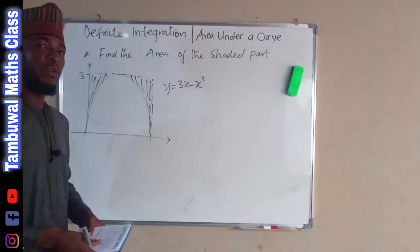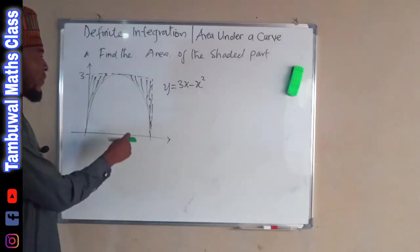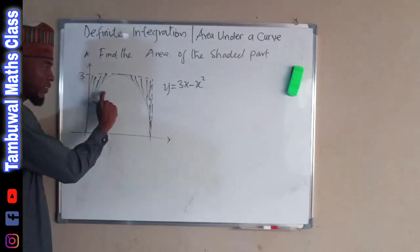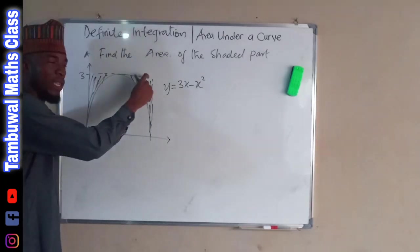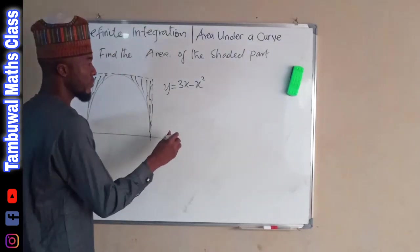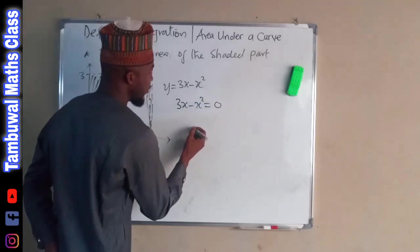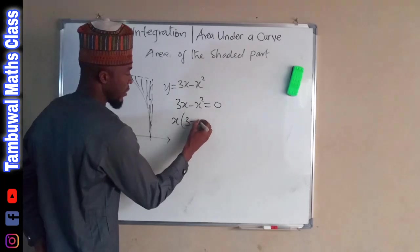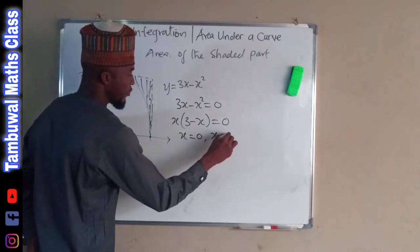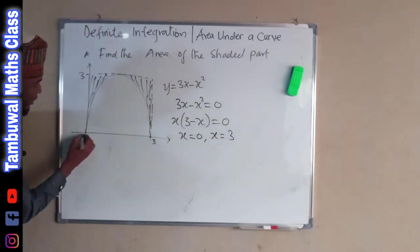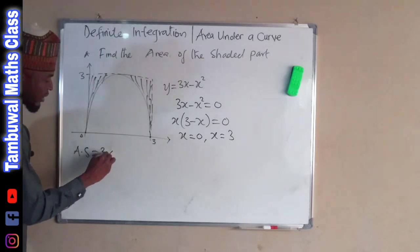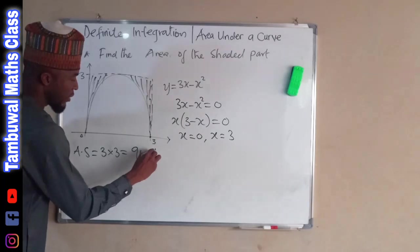Now let us look at the second problem. We are asked to find the area of the shaded region. To do this, we find the area of the quadrilateral, then find the area under the curve, and subtract. First, we find the zeros of 3x minus x squared equals 0. Factoring out x gives us x equal to 0 and x equal to positive 3. So this point is 3 and this point is 0, meaning the quadrilateral is a square with area 3 times 3, which equals 9 unit squared.